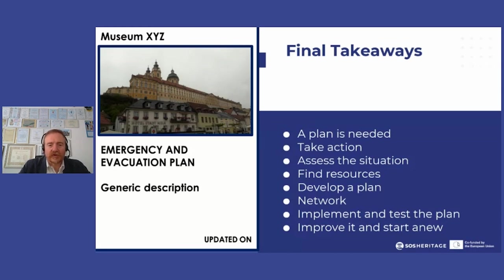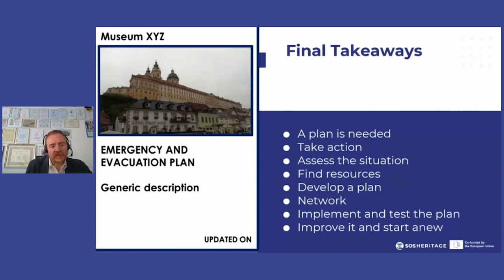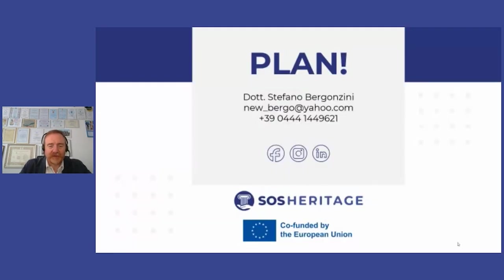We spoke of the importance of a network for mutual support. It is important to implement and test our plan so we can see what works and what does not, then improve on the shortcomings. Then we start anew. To conclude with the closing word: plan. Thank you very much.